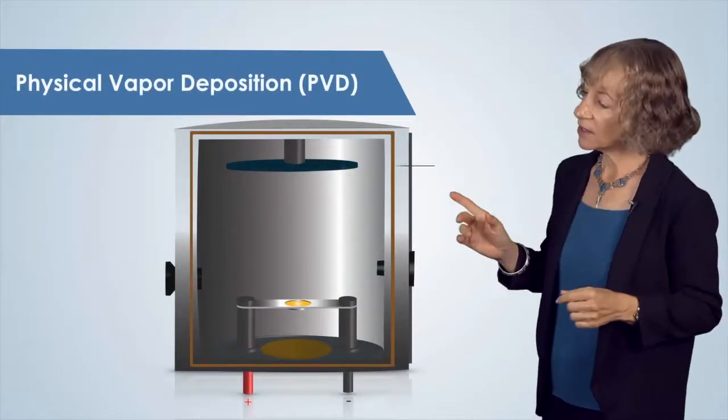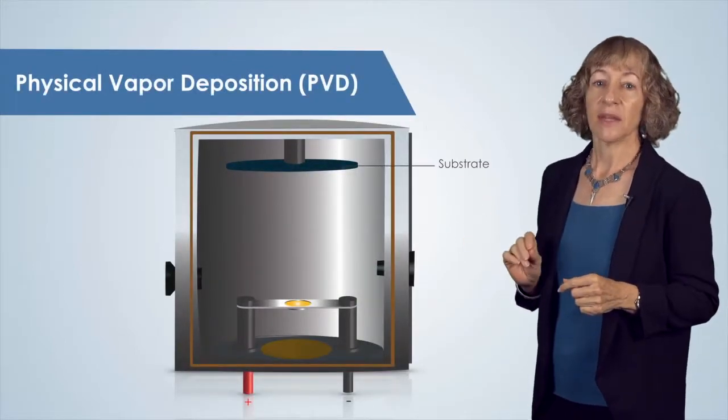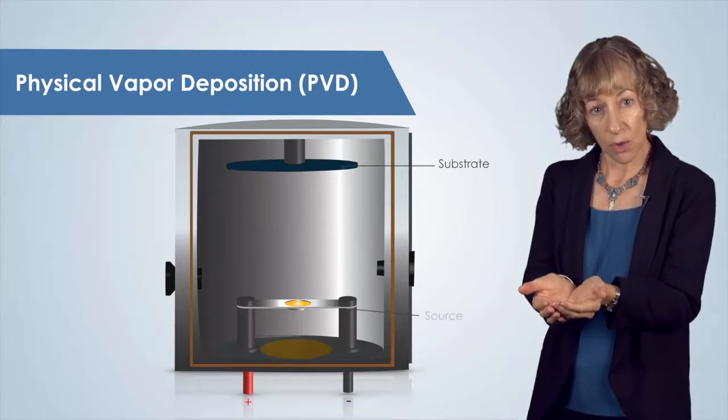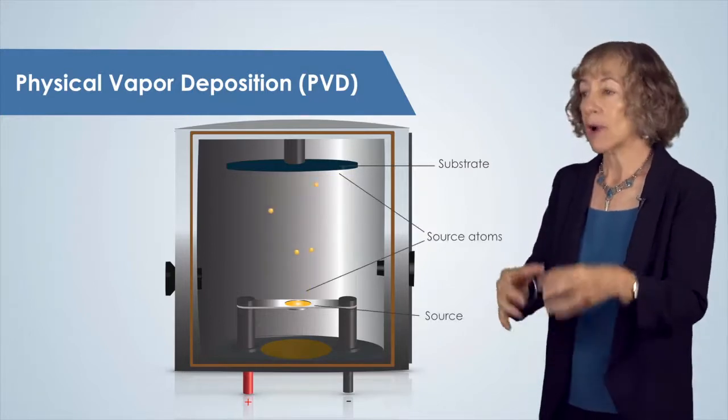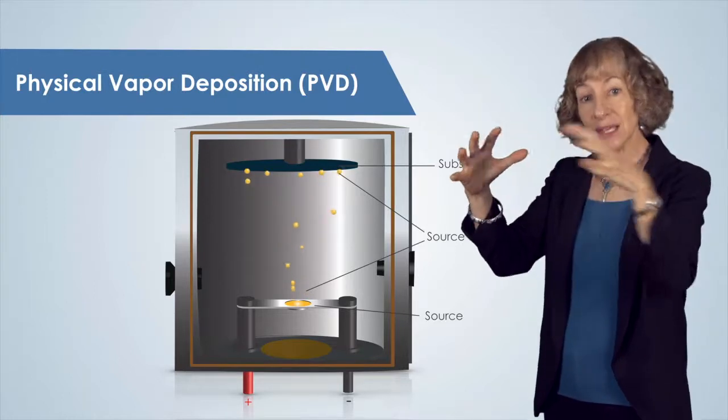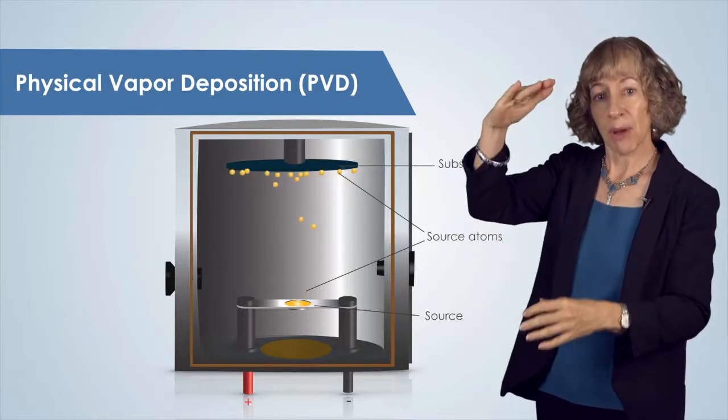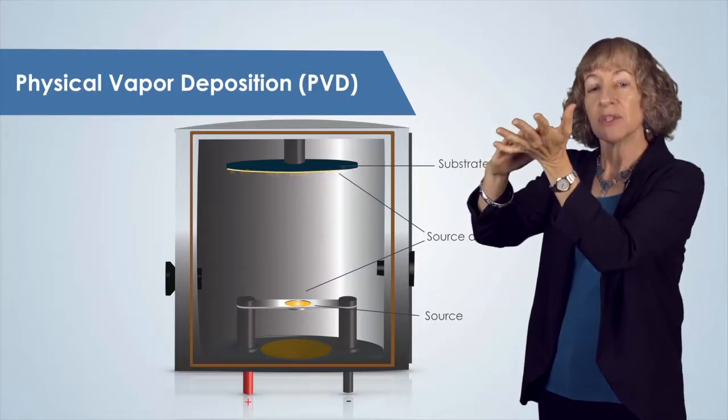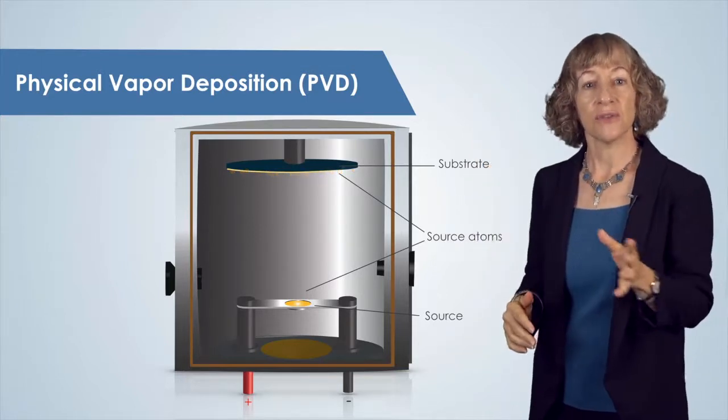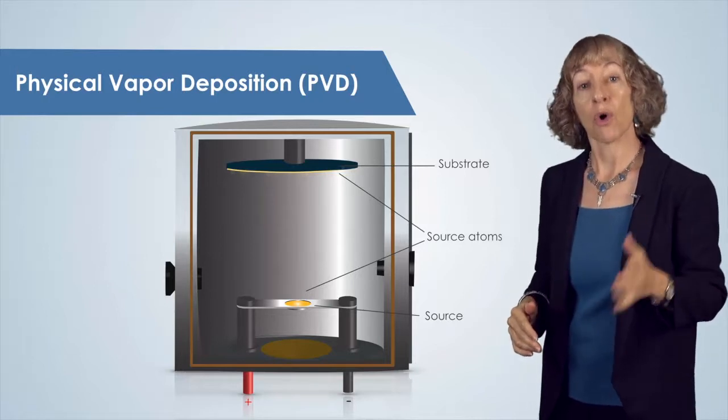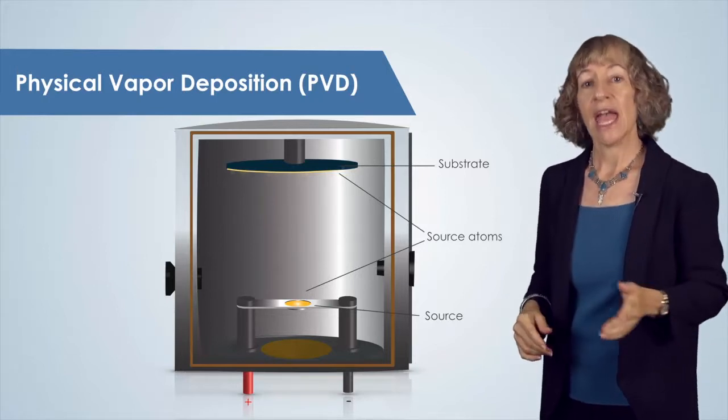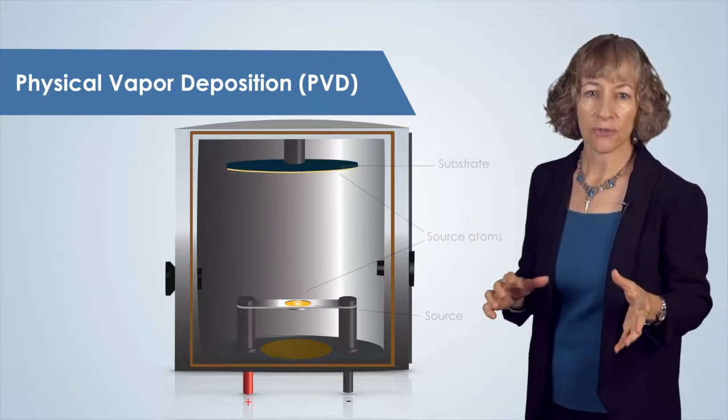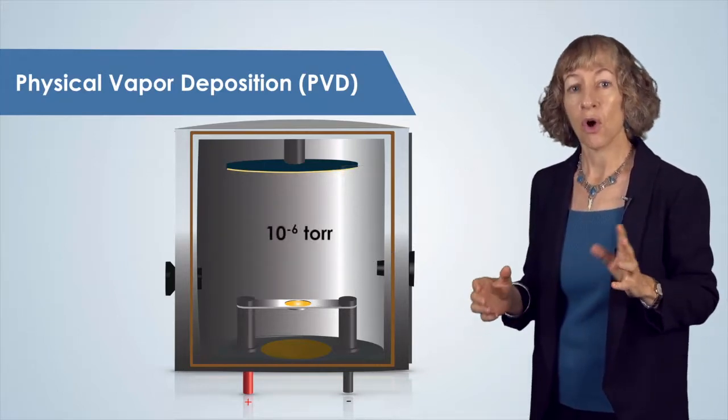As shown in this animation, the atoms come from an ultra-high purity material that we call the source. Atoms from this source travel through the vacuum in the vacuum chamber and are deposited onto the surface of our substrate. This process is called physical vapor deposition, or PVD, and requires vacuum environments with pressures on the order of 10 to the minus 6 torr, or equivalently, 1.3 times 10 to the minus 4 pascals.